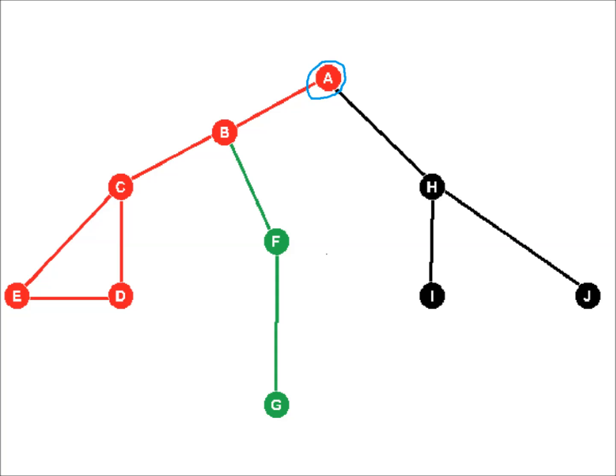From A, we can reach H. At H, we can go to either I or J. We visit I first. We can't reach any unvisited nodes from I,